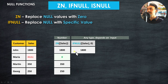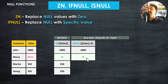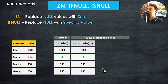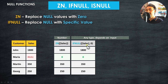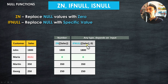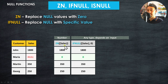The IFNULL syntax requires two arguments: the field we want to manipulate and the replacement value we specify. For example, specifying zero gives the same result as ZN. For non-null customers the value stays the same; for the null customer we get our specified replacement. The output data type matches the field type — number for a number field, string for a string field.